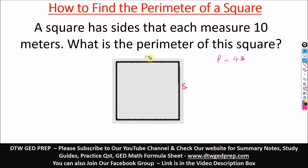You know, for a square all sides are equal. A square has sides that each measure 10 meters. So if this is 10 meters, this is also 10 meters, this is also 10 meters, and this is also 10 meters.